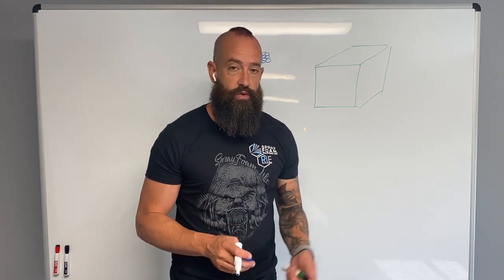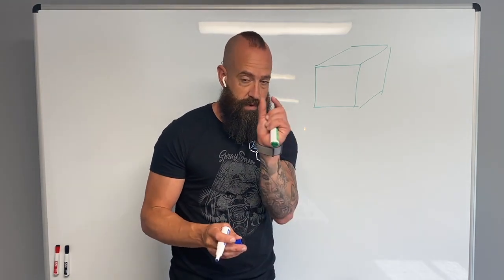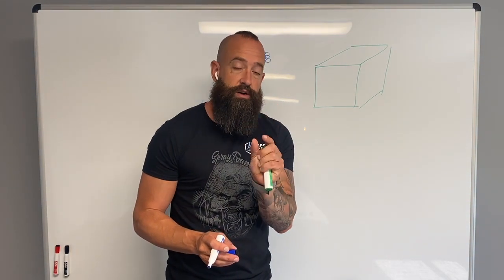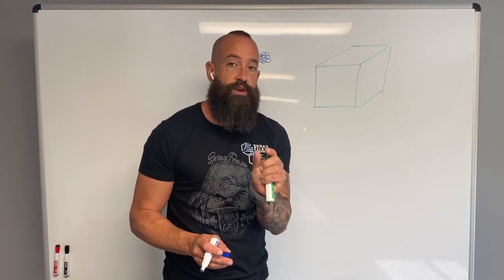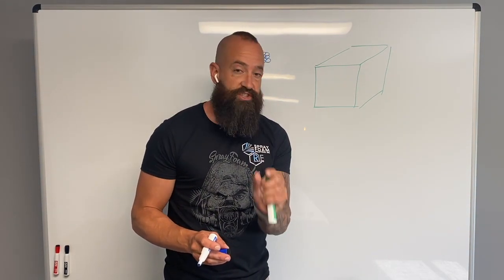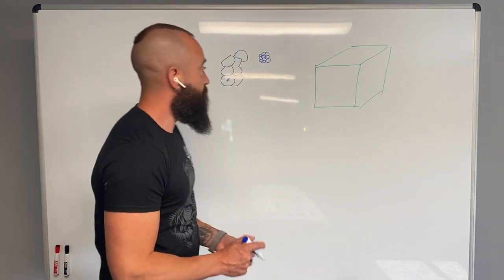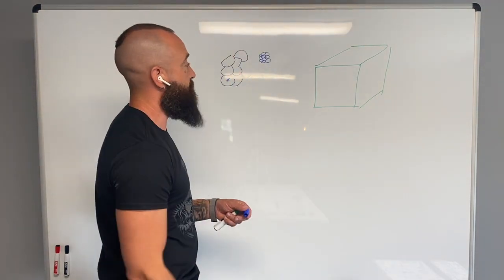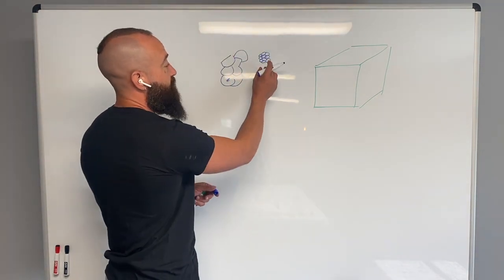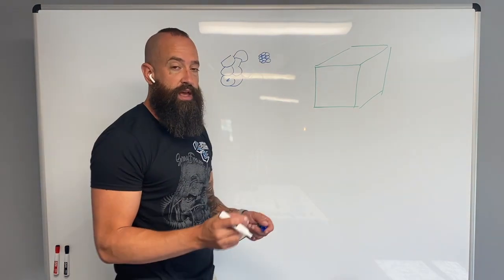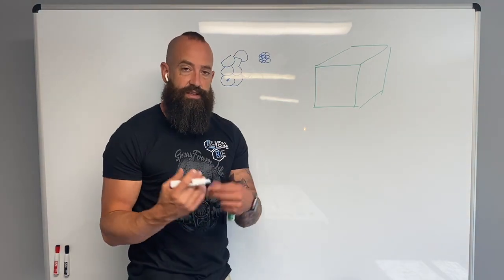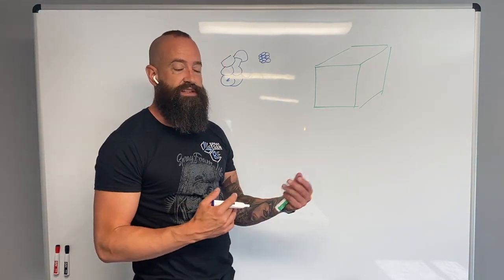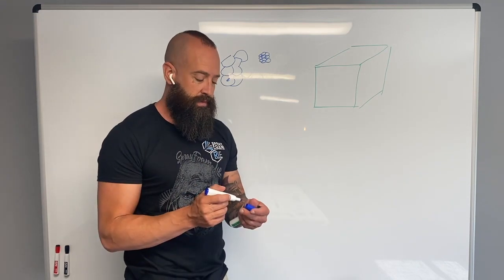Trapped gas is the insulator in every type of insulation there is. For example, you have your windows with a double pane — that gap in there is filled with argon gas, which is a better resistor than air. The closed cell foam has a blowing agent trapped in those cells, and that is kind of like the argon gas in your windows. It resists heat transfer better.